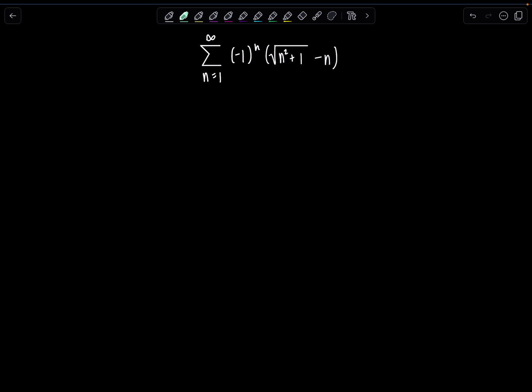First, let's identify what B sub n is. B sub n is everything without the negative 1 to the n portion. So that's the square root of n squared plus 1 minus n. When we apply AST, we want to check two conditions: is Bn decreasing, and is the limit of Bn as n approaches infinity equal to 0.